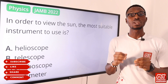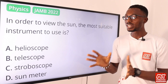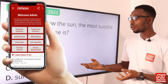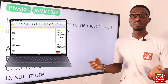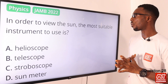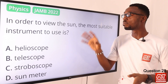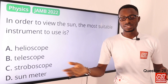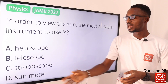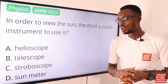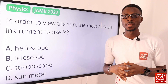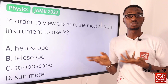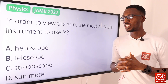It is very important that you have a JAMB CBT simulated experience. Click on the link in the description below to get to the MySchool website, where you can download the MySchool mobile app for Android devices or the MySchool software for your computers and laptops. Question 28: In order to view the sun, the most suitable instrument to use is the helioscope — you use it to observe the sun and sunspots. A telescope is for viewing distant objects in outer space. A stroboscope is for measuring rotating speed. A sunmeter or solar meter measures the intensity of sunlight falling on a surface. The correct option is option A for the helioscope.